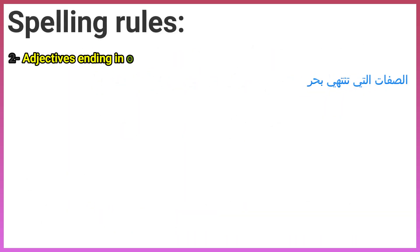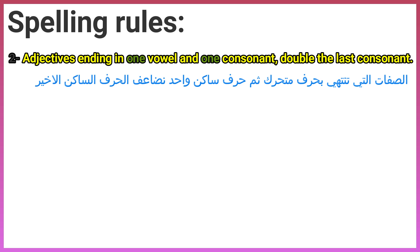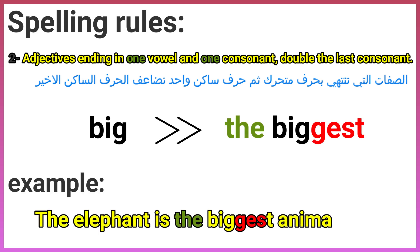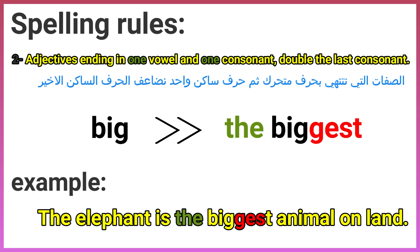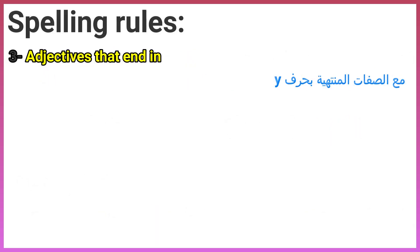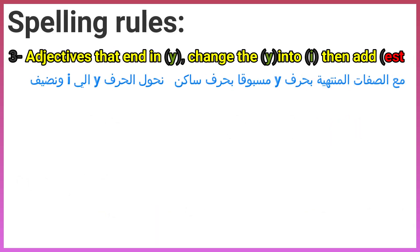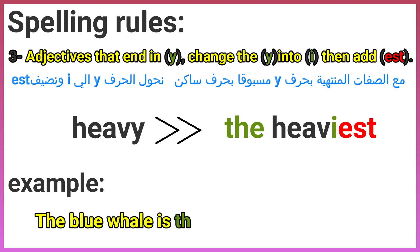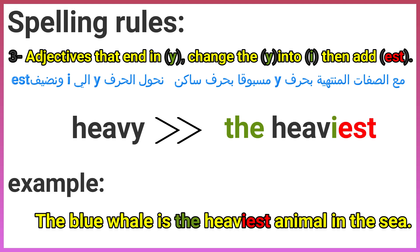Spelling rule two: adjectives ending in one vowel and one consonant — double the last consonant. For example: big → the biggest. Example: the elephant is the biggest animal on land. Spelling rule three: adjectives that end in y — change the y to i, then add est. For example: heavy → the heaviest. Example: the blue whale is the heaviest animal in the sea.